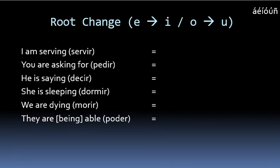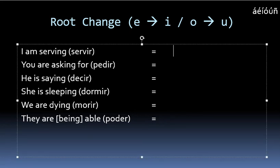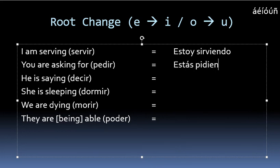Now a different set of irregularities — instead of changing the ending, we are actually going to change a vowel from the original root of the verb. In these cases, it will be changing an E to an I, or changing an O to a U. Taking 'I am serving,' that would be translated as estoy sirviendo — we change that initial E to an I. For 'you are asking for,' that could be translated as estás pidiendo. Those are examples of IR verbs where we take the E in the root and change it to an I.